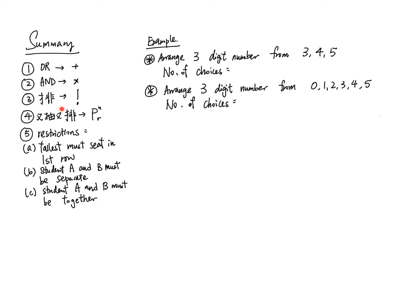When you have to arrange a group of data, you use factorial. If you need to select some data from a group and arrange it in order, then you use nPr. For more advanced level questions, there are usually some restrictions - for example, a particular datum may have special requirements, or two data need to be separate or together.